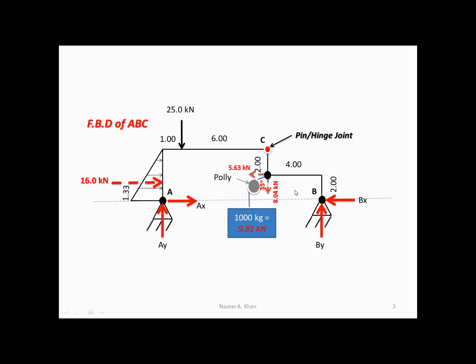On the right-hand side, the same as we've done on the left-hand side — we replace that support with a horizontal and vertical reactant force. Anytime that we don't have a magnitude for a force, we have to have a label. We've made the assumption that these reactant forces are acting with a particular sense — with a vertical sense of up and a horizontal sense to the right.